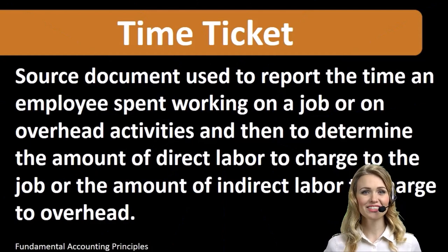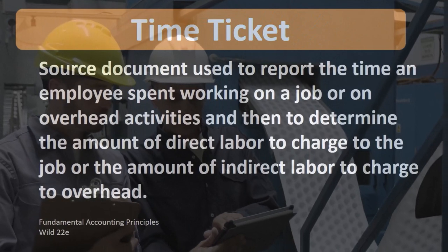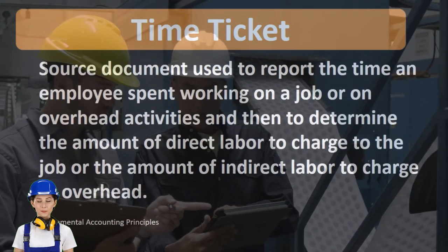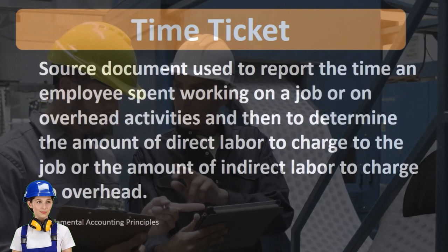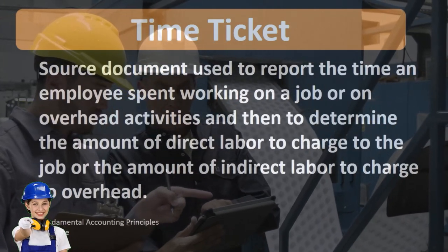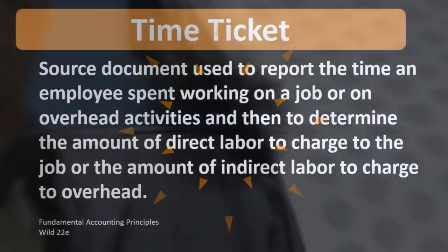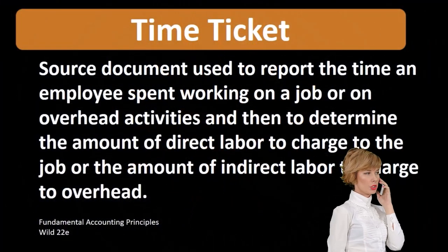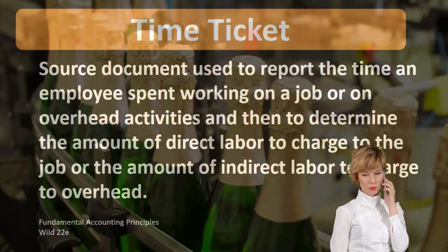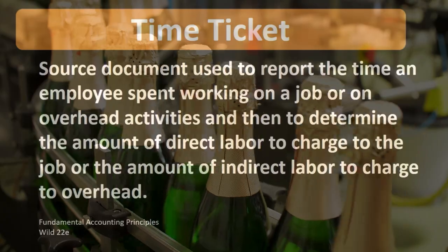We're considering a manufacturing type company in this scenario — one that produces inventory from raw materials, converting it ultimately to finished goods inventory, which is then prepared for sale, and when sold, is converted from the asset of inventory to the expense account of cost of goods sold.